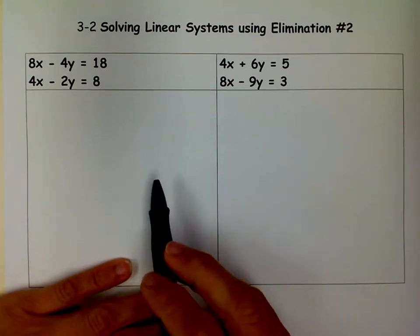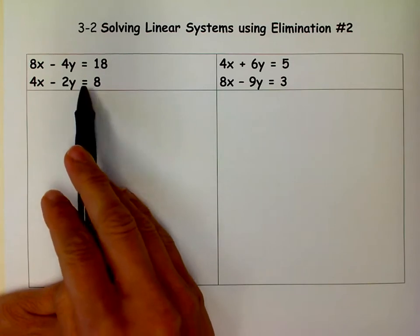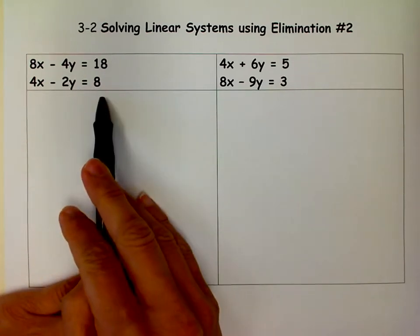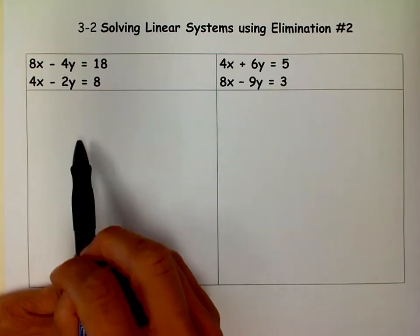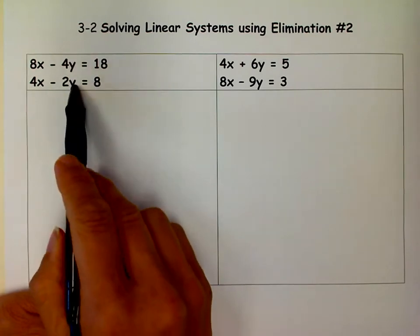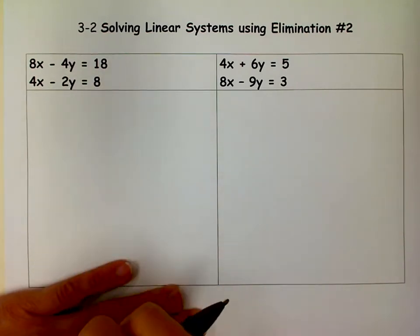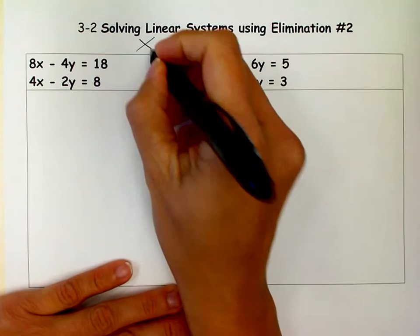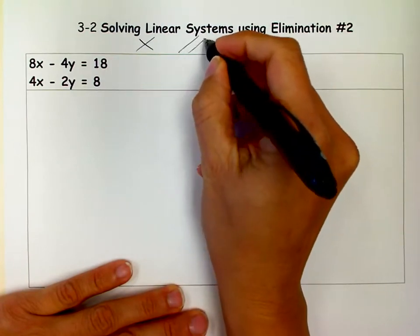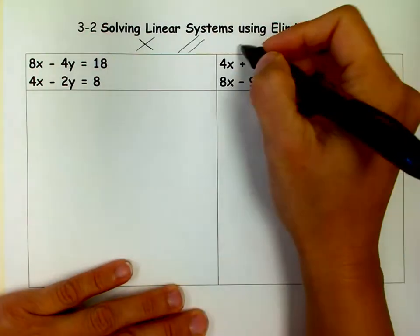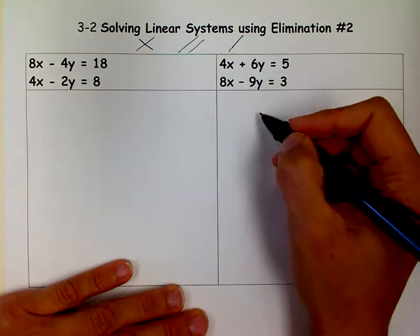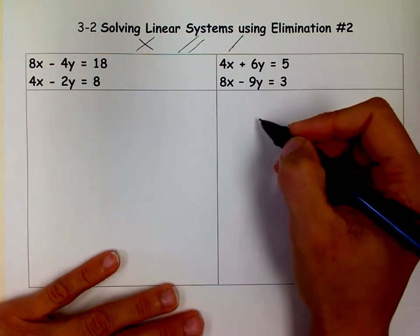Remember, our first step is to make sure the x's, the y's, and the numbers, and the equal signs are all lined up. And remember, when we're solving linear systems, we're finding where these two lines intersect. Sometimes lines don't intersect, sometimes they intersect once, sometimes they're parallel and don't intersect at all, and sometimes they're the same line and they have an infinite amount of solutions. So keep that in mind as we go through these.